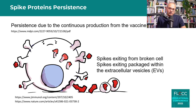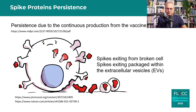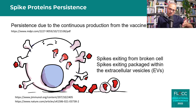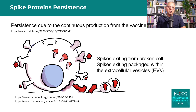Spike protein can exit if the cell breaks down — for example, when cytotoxic T cells or natural killer cells destroy the cell, spike proteins spill out. Additionally, spike proteins inside the cell can become packaged in a vesicle that exits the cell — these are extracellular vesicles. This means spike protein can be produced in the body, from infection or vaccine, for a longer period of time.